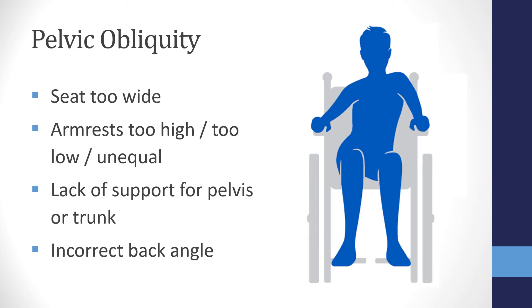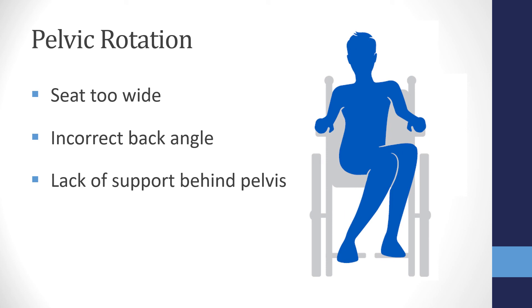Pelvic obliquity could be caused by the seat being too wide, allowing the client room to shuffle or lean. Maybe the armrests are too high, too low, or unequal, again causing the trunk to lean to one side. Lack of support for the pelvis or trunk, and an incorrect back angle that doesn't accommodate the client's hip range of movement, could cause pelvic obliquity as the client needs to open up the hip angle on one side for comfort. Finally, we have pelvic rotation, which can have the same extrinsic causes as pelvic obliquity — the seat being too wide, the back angle not being set correctly to accommodate a reduced hip range of movement, or a lack of support at the pelvis.